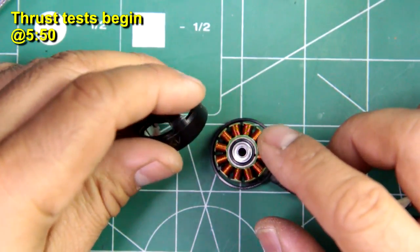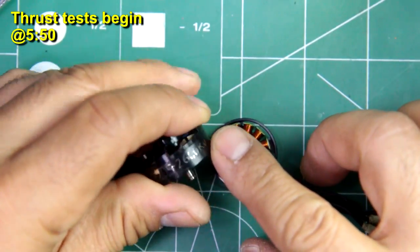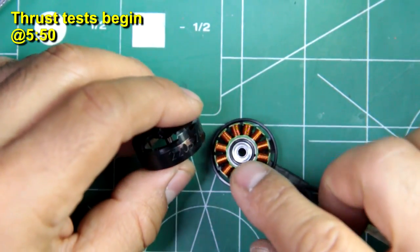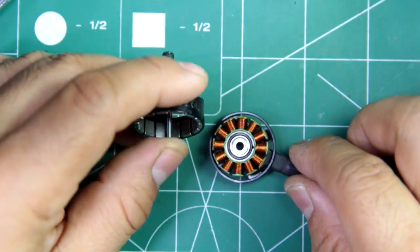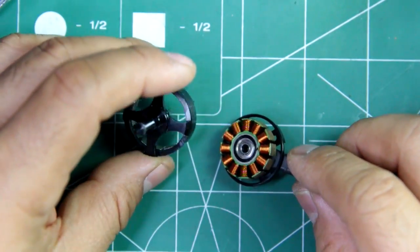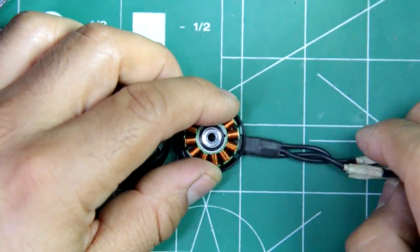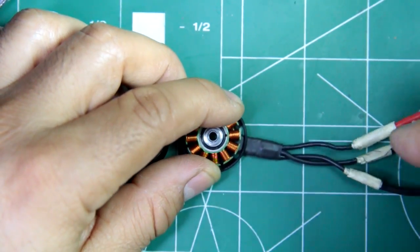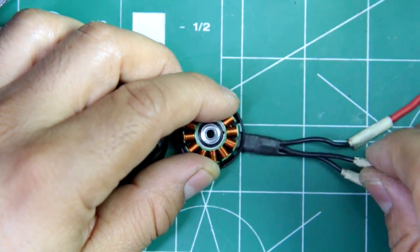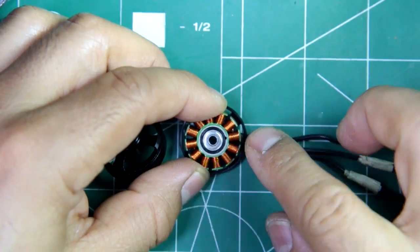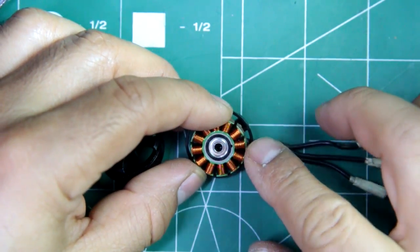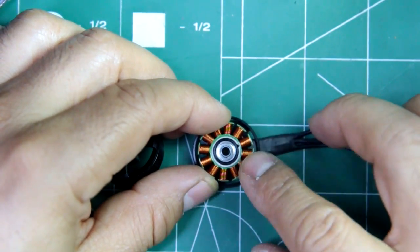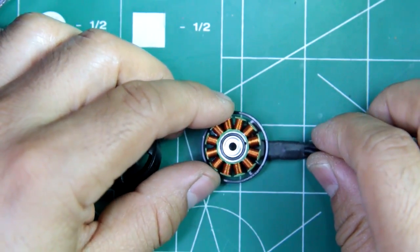Alright, so here we have my RC Mart RCX SC2205-2600kV motor. This was sent in by my RC Mart, thanks to my RC Mart for sending sample test motors so we can put them through their paces and check out the performance, so we can all see what they're capable of doing.